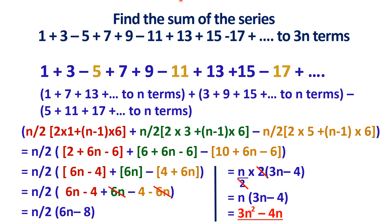The sum of this series is 3n squared minus 4n. Since the n value is not given, we cannot simplify further, so the final answer is 3n squared minus 4n. That is how we solve problems in arithmetic progression using the formula for the nth term and the formula for the sum of n terms. Thank you for watching this video. For more videos, subscribe to the channel.